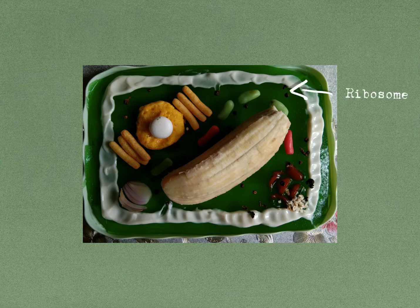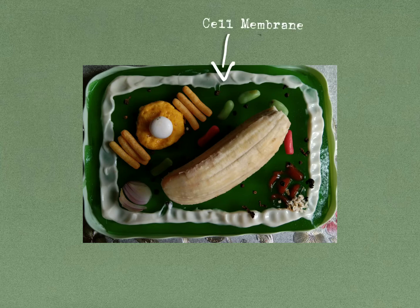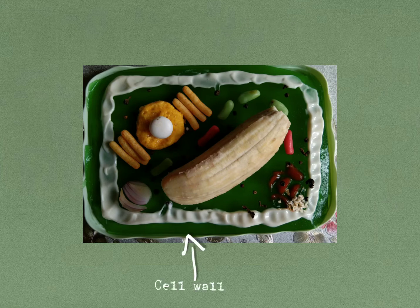Ribosomes receive information from the cell nucleus and construction materials from the cytoplasm. The plasma membrane, or the cell membrane, provides protection for a cell. The cell wall surrounds the plasma membrane of plant cells and provides tensile strength and protection against mechanical and osmotic stress.